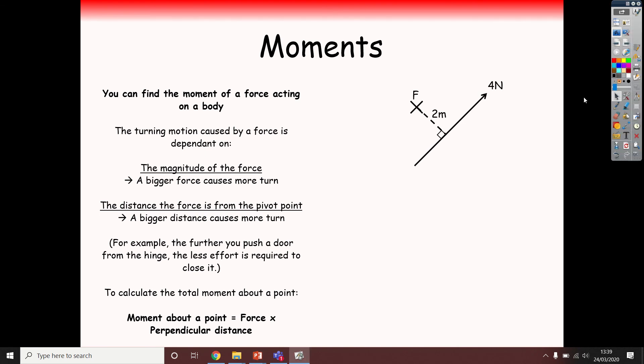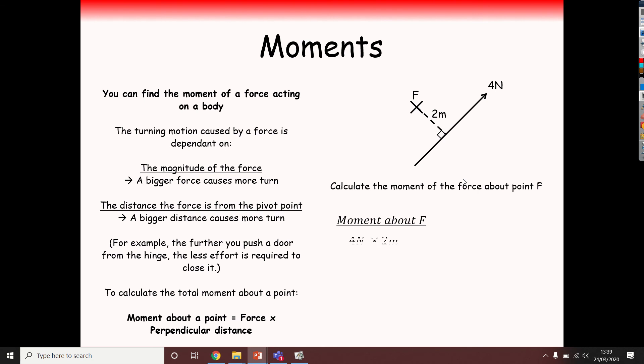Sometimes things are drawn a bit more abstractly. You've got the pivot point over here. This is F. You might want to pretend that this is attached to a force that's acting this way, but four newtons two metres away at a perpendicular angle. The moment's going to be four times two. That's eight newton metres. But this time, because we're rotating around this way, it's going to be anticlockwise.